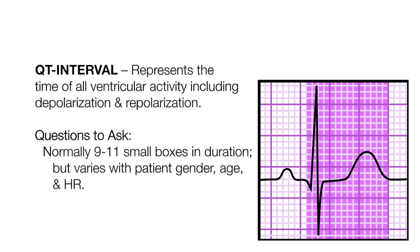The last step is to look at the QT interval. This represents the time of all ventricular activity, including depolarization and repolarization. It is normally 9 to 11 small boxes in duration, but varies with patient gender, age, and heart rate.